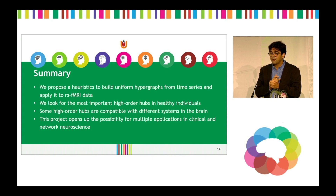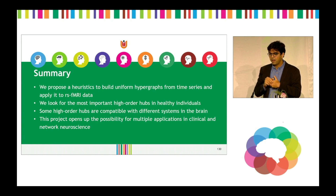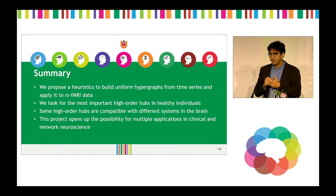To summarize: we propose this heuristic to build higher-order networks and apply it to fMRI data. We found the most important hubs in healthy individuals and see potential for multiple applications in clinical and network neuroscience settings. This was not done alone — I thank the Multinet team, the IES members, and especially HICWACs. Thanks for your attention; I look forward to your questions.